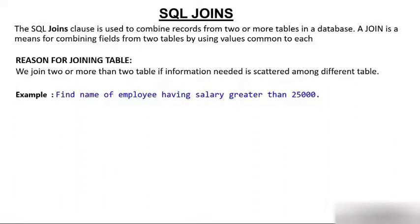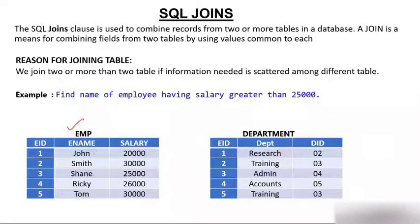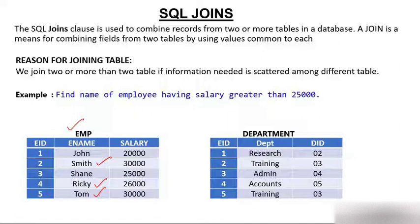For example: find the name of employee having salary greater than 25,000. In this case, only one table is sufficient. Employees with salary greater than 25,000 are Smith, Ricky, and Tom — three employees. I'm getting all this information from one table, so no join is needed here.